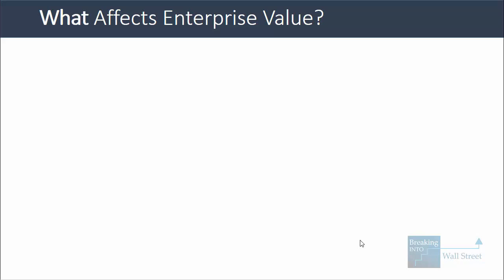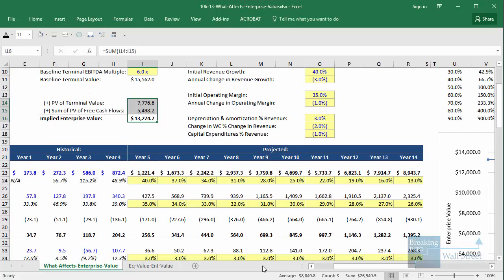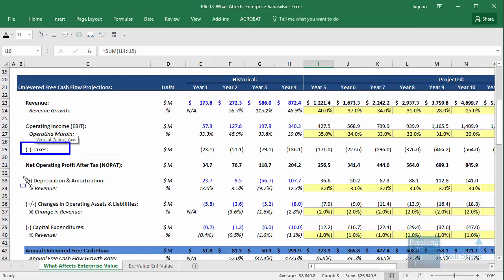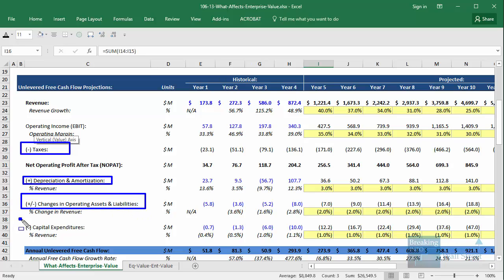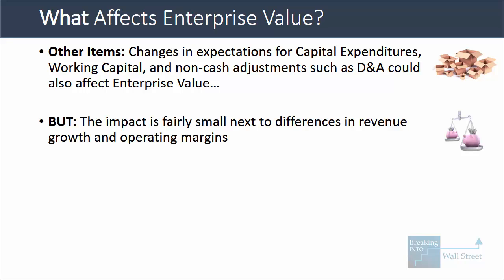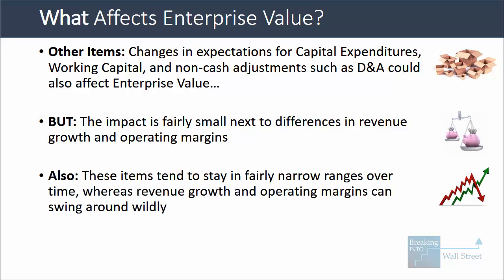In a DCF analysis there are many components: revenue growth and operating margins are key, but you also have taxes, non-cash addbacks like depreciation and amortization, working capital changes in operating assets and liabilities, and capital expenditures. All of these could potentially impact enterprise value, but for the most part changes in these items will make a fairly small impact compared to changes in revenue growth and operating margins. These items tend to stay in fairly narrow ranges, whereas revenue growth and operating margins can see much bigger changes, especially over the long term.